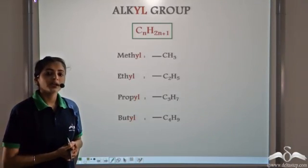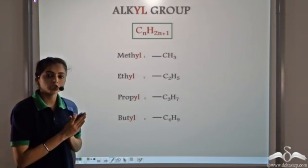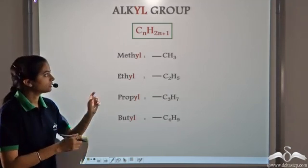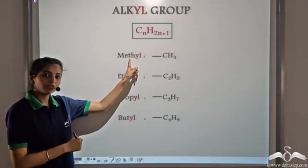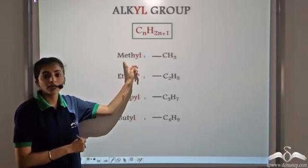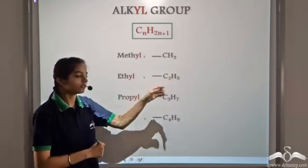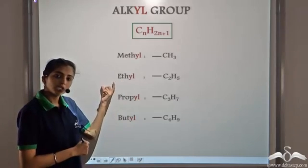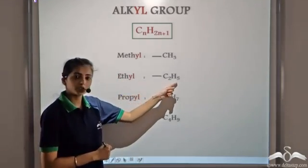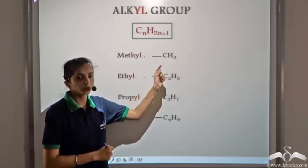We get the alkyl group when we remove one hydrogen atom from the corresponding alkane. So we have methane — when we remove one hydrogen atom, we get the methyl group, that is CH3. When we remove one hydrogen atom from ethane, we get the ethyl group, that is C2H5, and one place is vacant for any group to be attached.